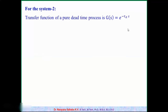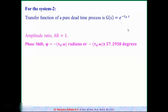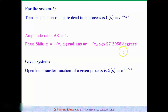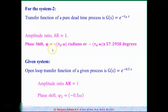System 2 is a general transportation delay (pure dead time) system. For a pure dead system e^(−τd·s), the AR value equals 1 and phi = −τd × ω. The given System 2 is e^(−0.5s), which matches this form with τd = 0.5. Substituting, AR₂ = 1 and phi₂ = −0.5ω.